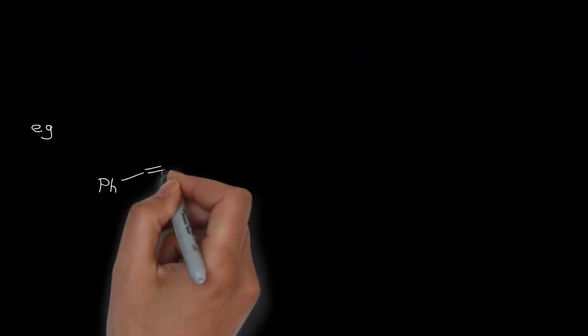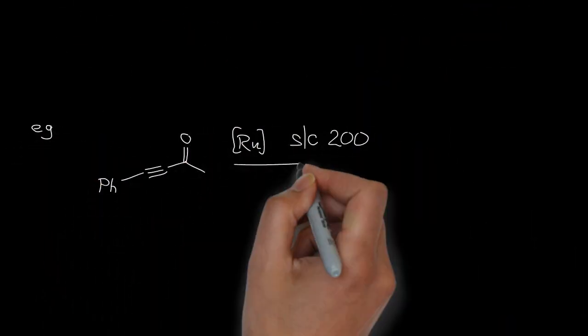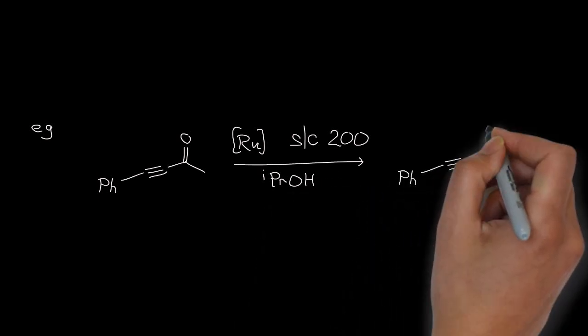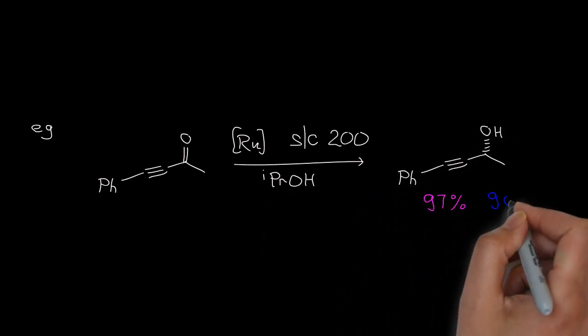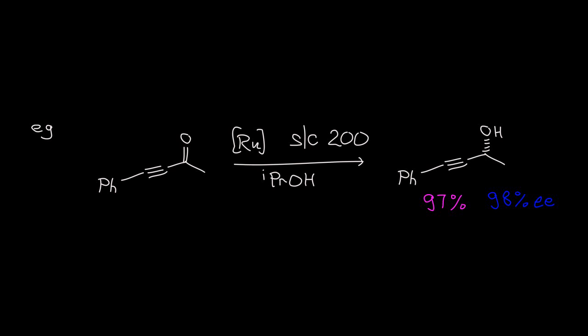Substrate-to-catalyst ratios of 200 to 1 are high for this type of reaction. And it's chemoselective. Alkenes and alkynes are not reduced.